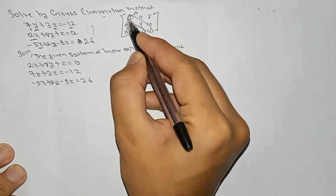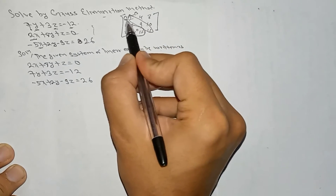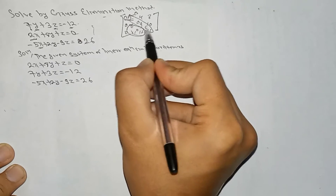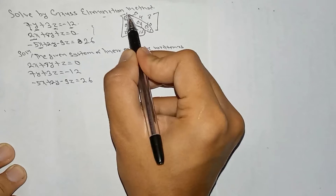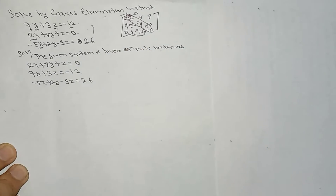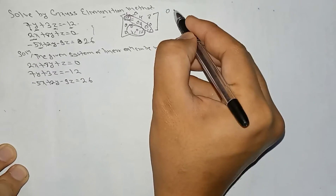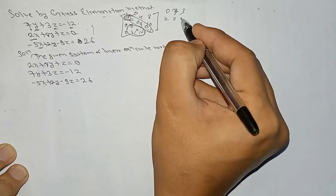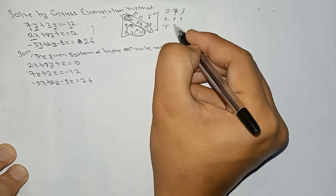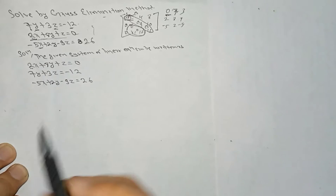Always remember: we cannot have a zero on the leading diagonal. We cannot have the value of 0 in the leading diagonal. We can have 0 in the lower positions, but cannot have 0 in the leading diagonal. So, if we write the equation in matrix form and it becomes 0, 3, 0, 7, 3, 2, 8, 1, minus 5, 2, minus 9 — but then we have 0 in the leading diagonal, so we must rearrange.